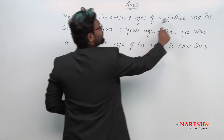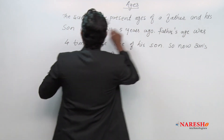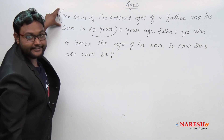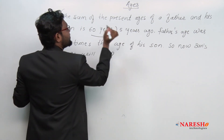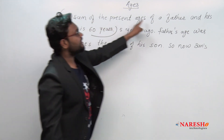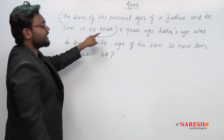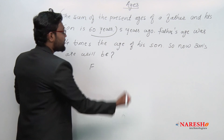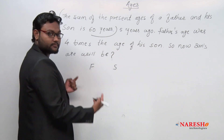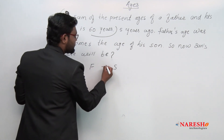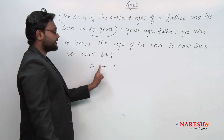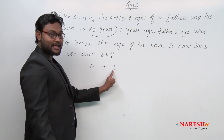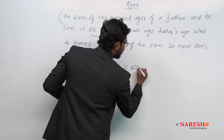As we read the first sentence — the sum of present ages of father and his son is sixty years — let us consider the present age of father as F and the present age of son as S. So the sum of father's age and son's age is sixty years: F + S = 60.